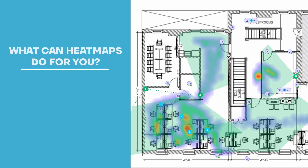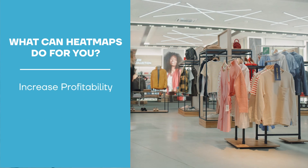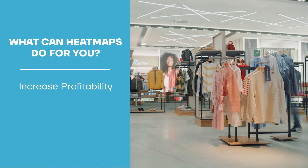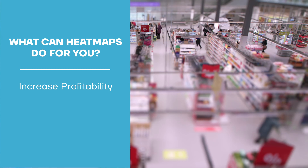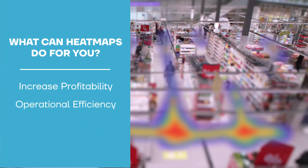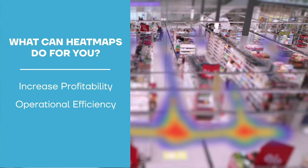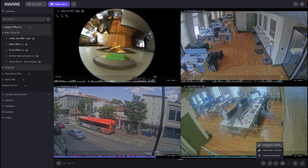So, what can heat maps do for you? Retailers can use heat maps to position higher margin goods where there's the most traffic. Facilities can dynamically service locations based on data, renegotiating cleaning contracts for areas that are underused, and security teams can determine where to best place resources.